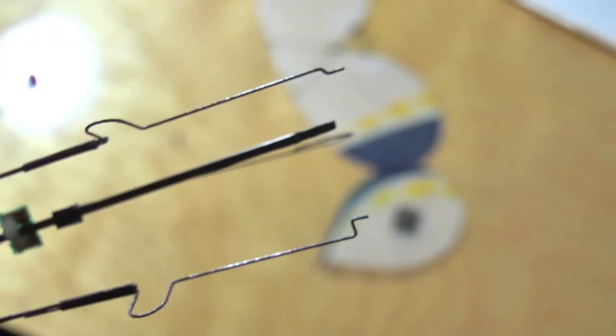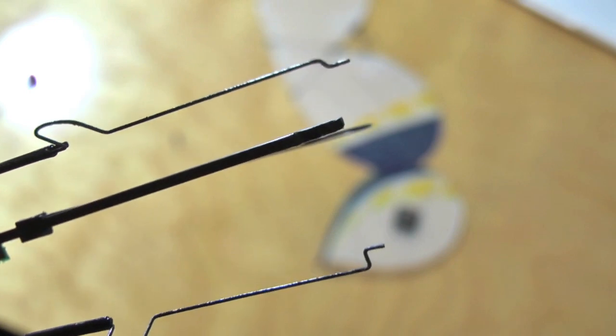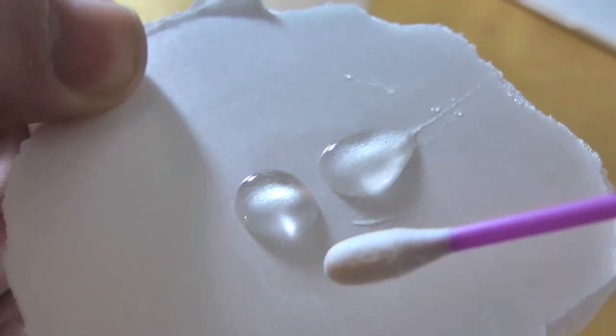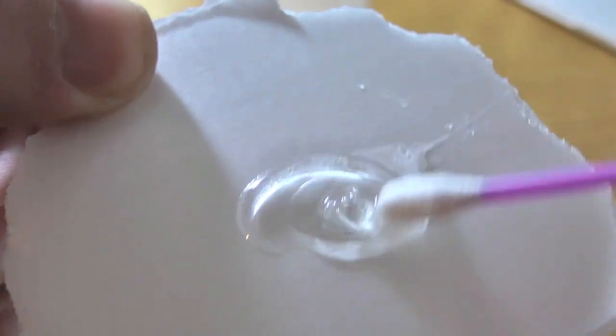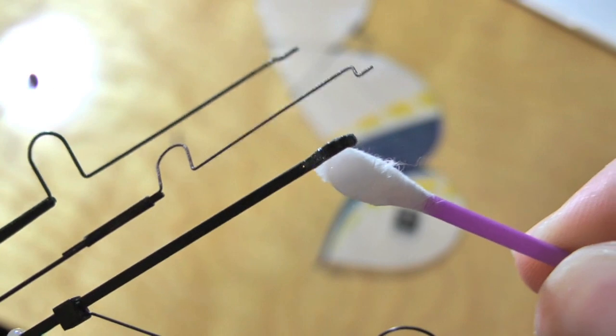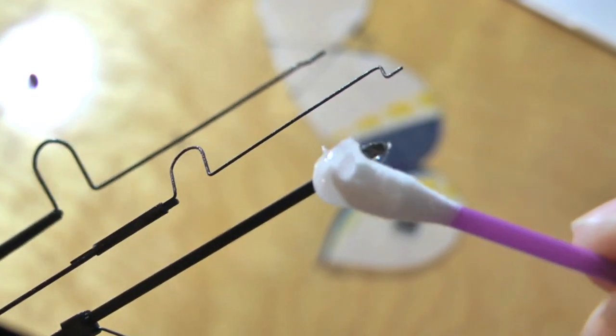Carefully remove the plastic piece that held the rudder and elevator in place with an X-Acto knife. Now I mixed up some 5-minute epoxy and applied it to the carbon rod. Then I slid on the new elevator assembly and made sure everything was square.